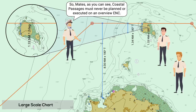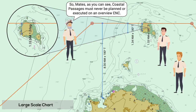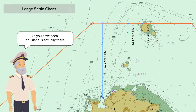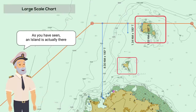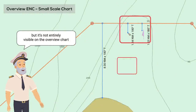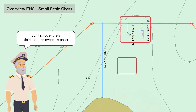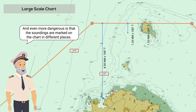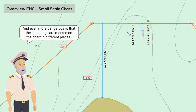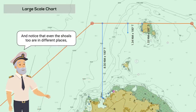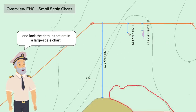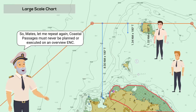So, mates, as you can see, coastal passages must never be planned or executed on an overview ENC. As you have seen, an island is actually there, but it's not entirely visible on the overview chart. And even more dangerous is that the soundings are marked on the chart in different places. Notice that even the shoals are in different places and lack the details that are in a large-scale chart. Coastal passages must never be planned or executed on an overview ENC.